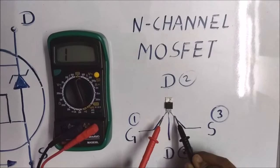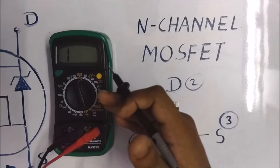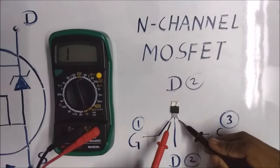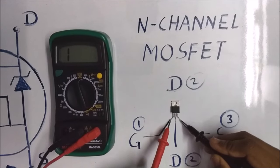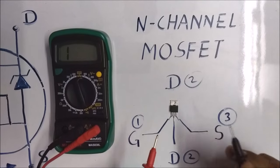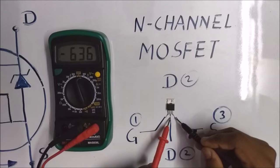If we give supply to gate with respect to source which is greater than VTH from multimeter, and give supply to gate and source terminal, and after checking drain and source terminal, we get a value.